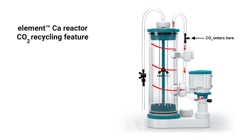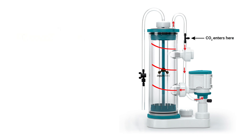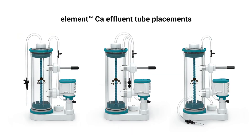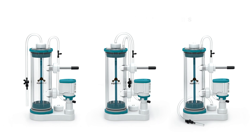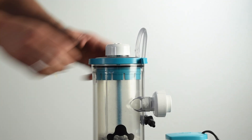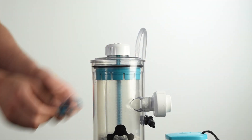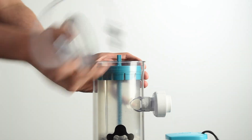The Element CA has a built-in CO2 recycling feature. CO2 is recirculated for complete use of injected CO2 within the chamber, which saves money on CO2 canisters and refills. The effluent tube can be placed in one of three locations to suit your preference. Like the other Element reactors, the media chamber is quick to remove for easy cleaning or media top-offs.